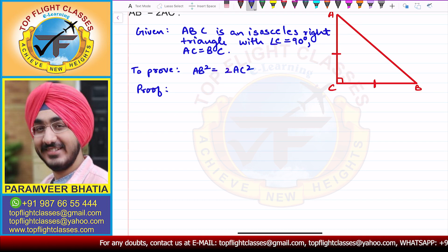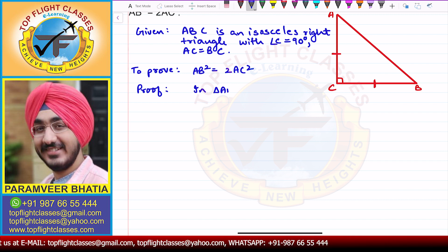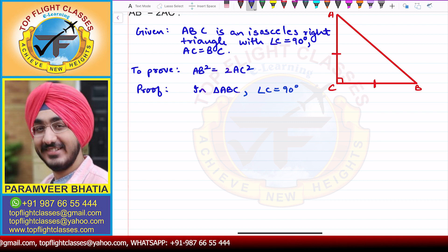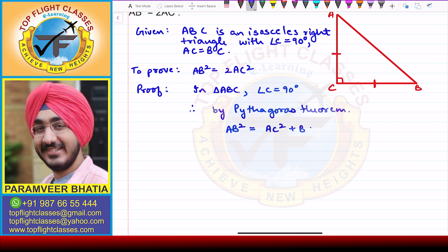This proof is very simple. In triangle ABC, angle C is equal to 90 degrees. Therefore, by the Pythagoras theorem, the hypotenuse squared — which is AB in this case — gives us AB square equal to AC square plus BC square. Let this be equation 1.